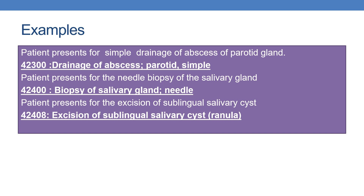Let us see some examples. A patient presents for simple drainage of abscess of parotid gland — the CPT is 42300, drainage of abscess parotid simple. Next, a patient presents for needle biopsy of the salivary gland — the CPT is 42400, biopsy of salivary gland needle. Next, a patient presents for excision of sublingual salivary cyst — the CPT is 42408, excision of sublingual salivary cyst or ranula.